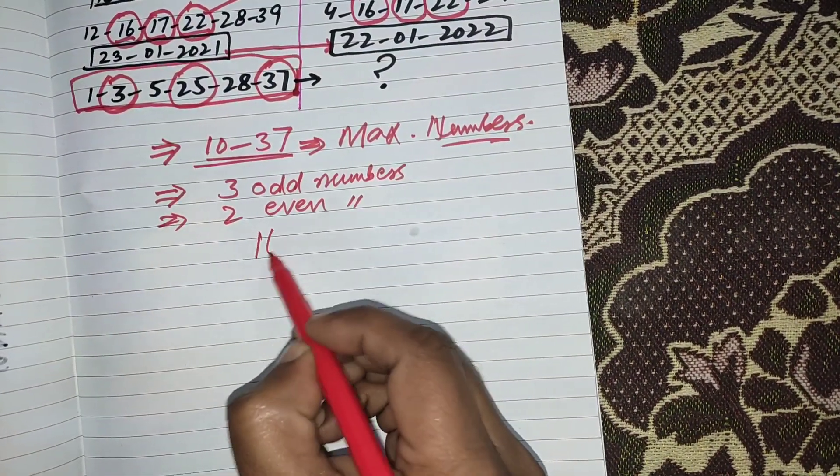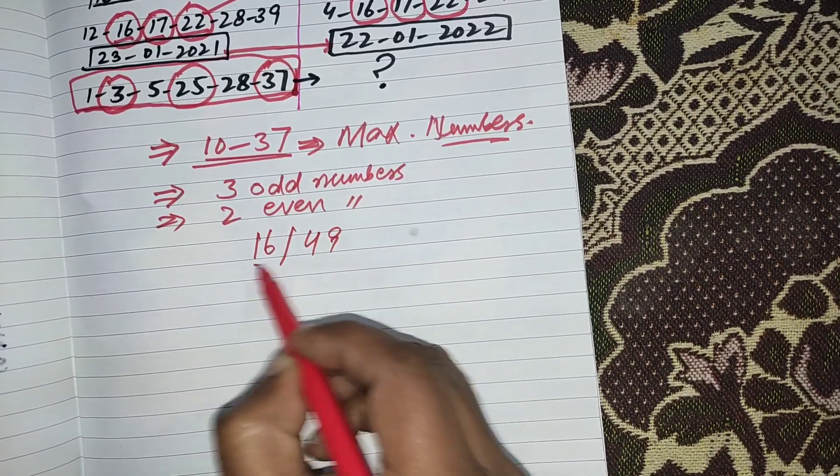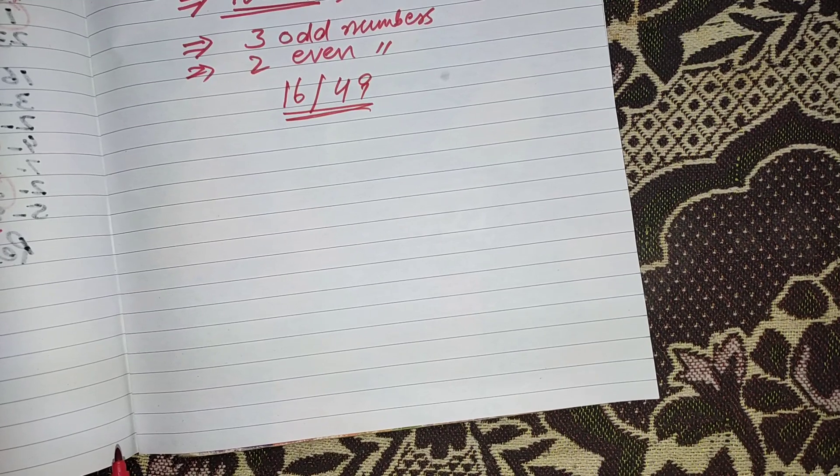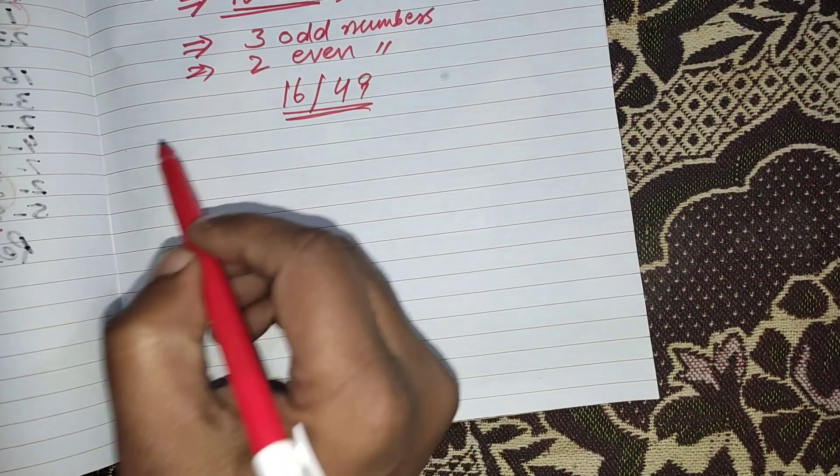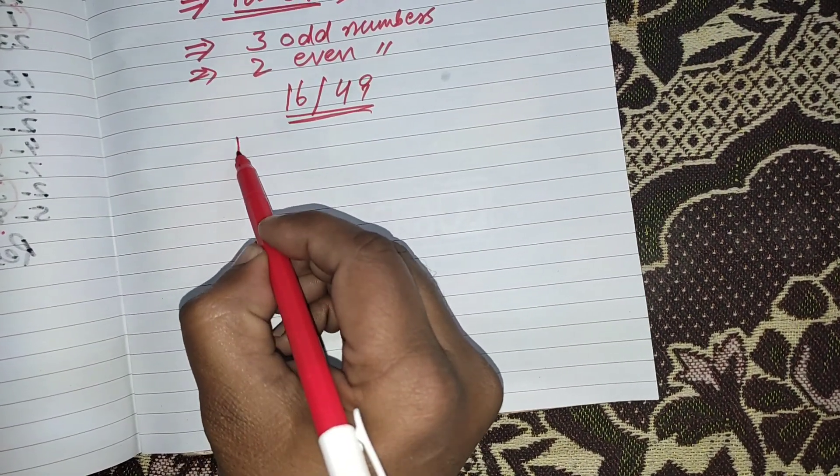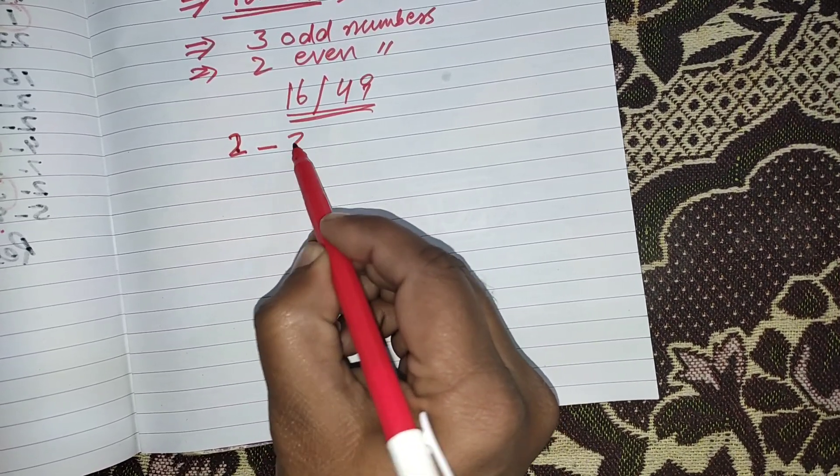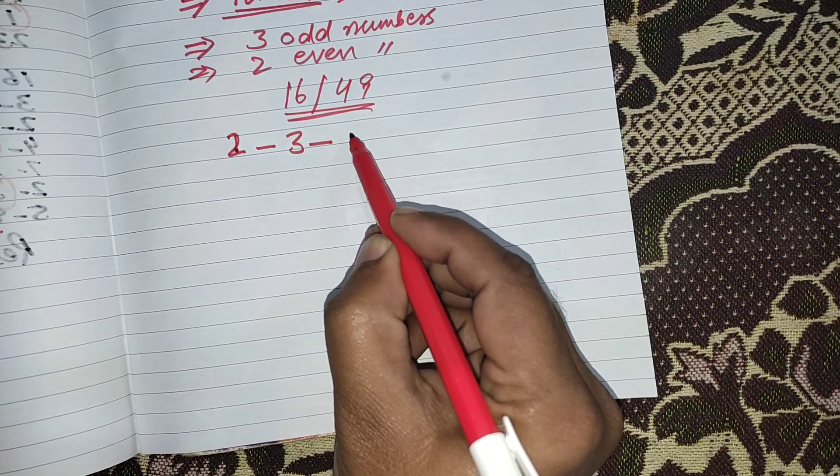Finally, my 16 powerful numbers out of 49 which has very high chances to come. From 1 to 9 I have 3 numbers: 2, 3 and 9.